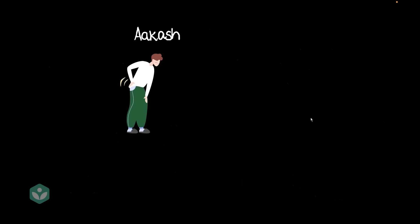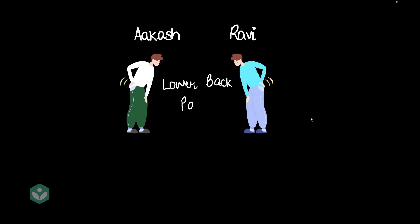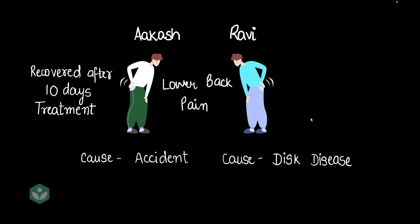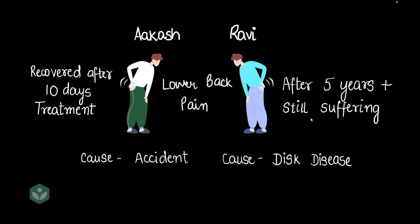Now let's look at a short story. Here we've got Akash and Ravi. Both of them are suffering from lower back pain — they have the same symptom, but the causes are a little different. Akash got this lower back pain because of an accident, whereas Ravi got the lower back pain because of a disc disease. Akash took treatment for 10 days and then he recovered. Whereas Ravi has been taking treatment for 5-plus years and he is still suffering. It's very clear that Akash has an acute disease, whereas Ravi has a chronic disease.